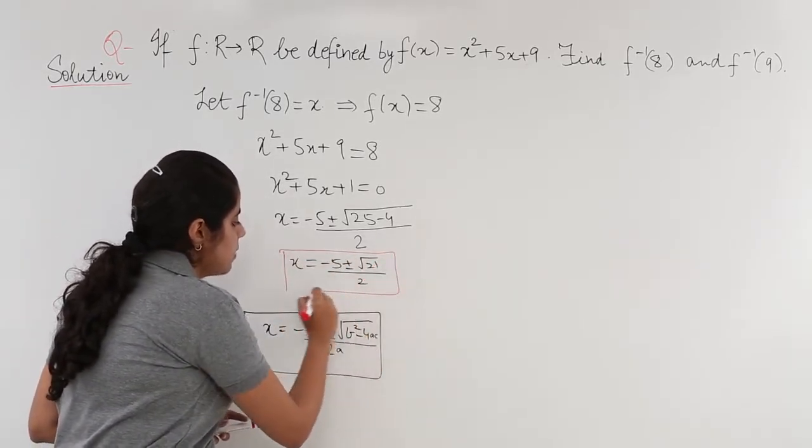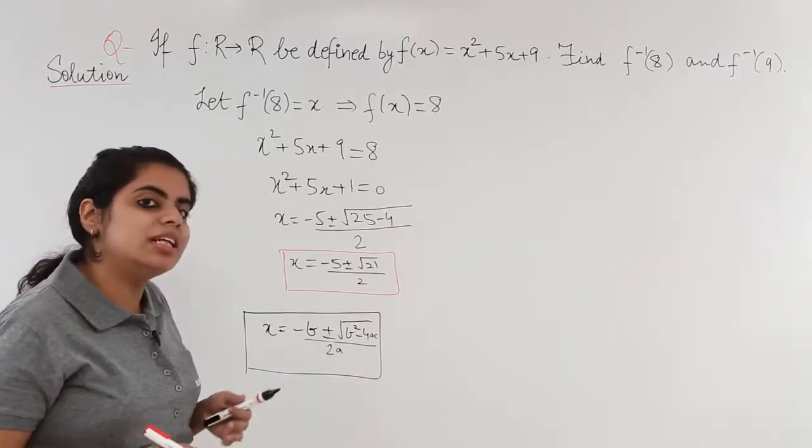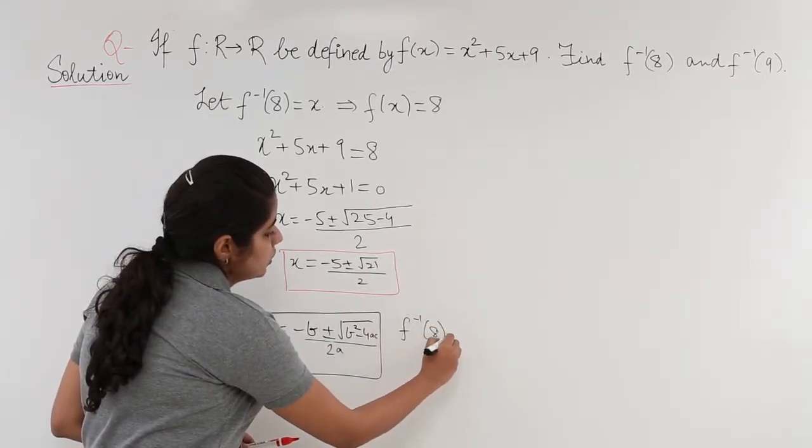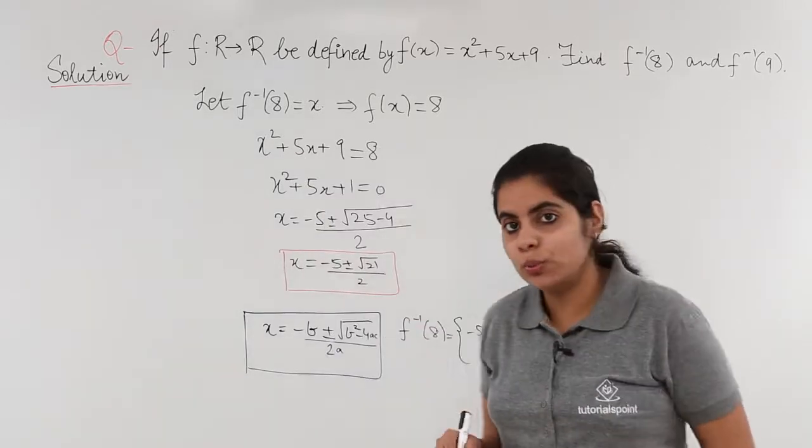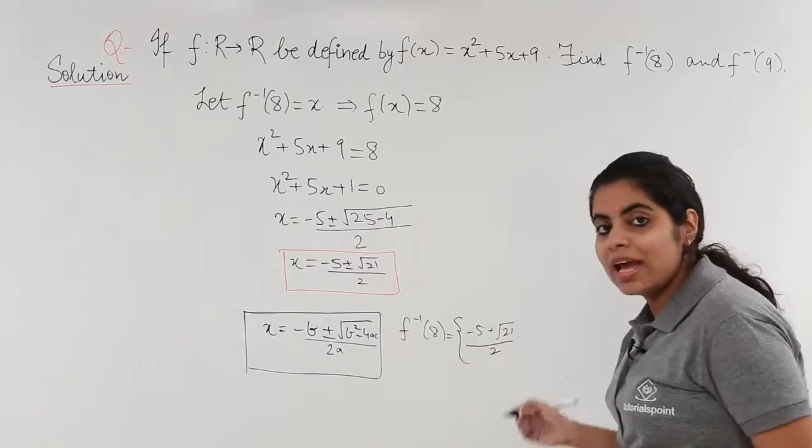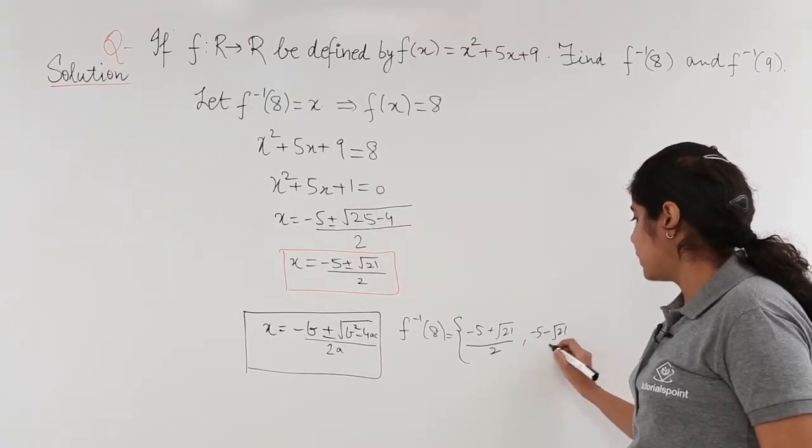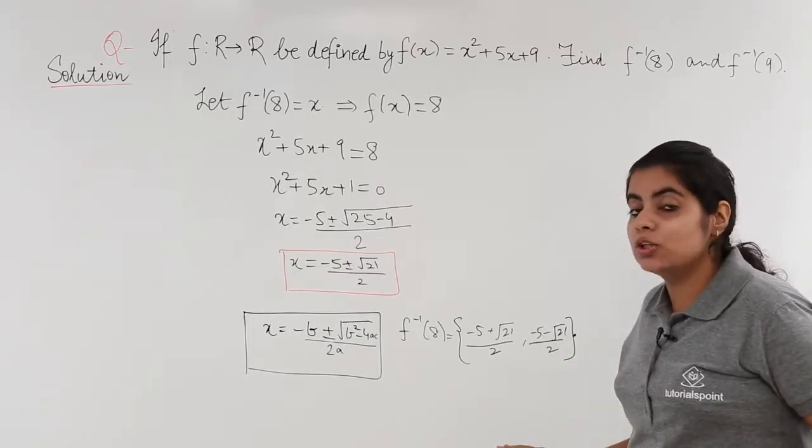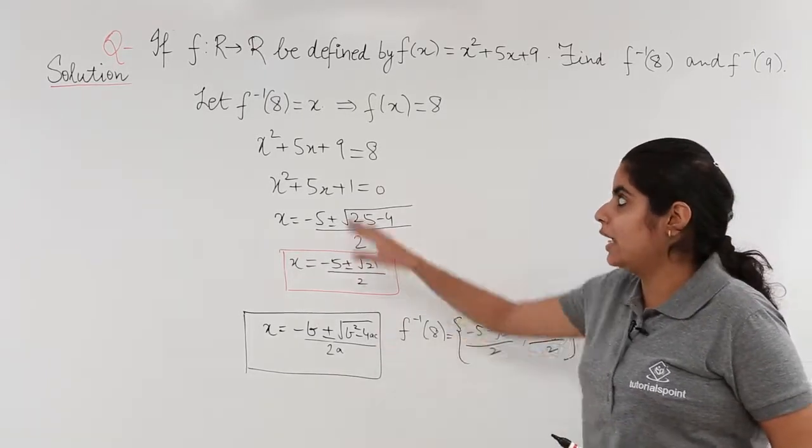This is the answer that we obtain but it is advisable in set theory in functions that you write the solutions in curly braces. So the answer could be written as f⁻¹(8) which was asked is equal to the first root (-5 + √21)/2 and (-5 - √21)/2. This can be enclosed in the curly braces. This is the solution to the first thing asked. The first thing asked was f⁻¹(8) which we found out.